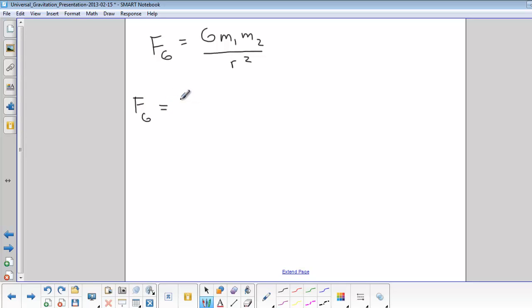So big G is 6.67 times 10 to the negative 11th and that's Newton meters squared over kilograms squared.